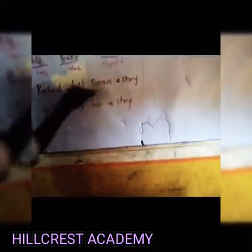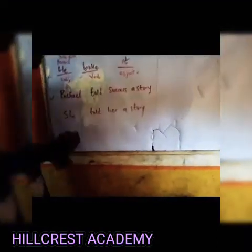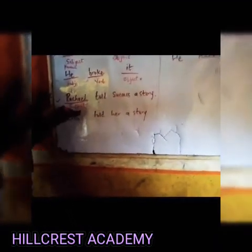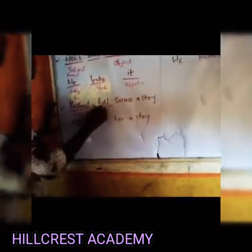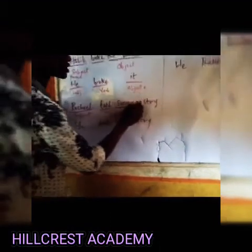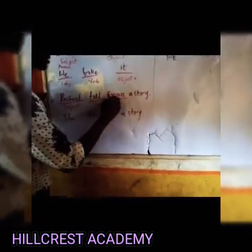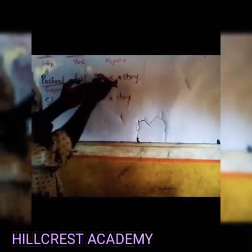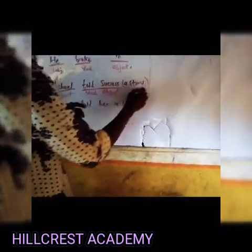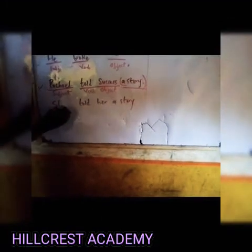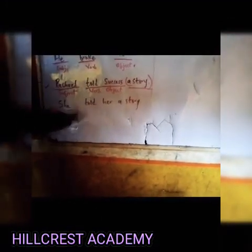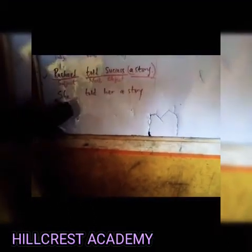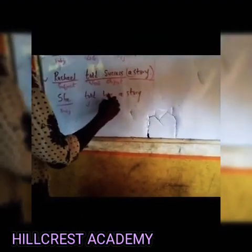Let's go on to the second example: 'Rachel told Success a story.' Rachel here is the subject — she is a noun — because she performs the action. Told is the verb — the action that was performed. Success here is the object that receives the action 'told.' So we have: doer of the action, action itself, and receiver of the action. Rachel becomes the pronoun 'she' — because a subject can be a noun or a pronoun. So: she told her a story — subject, verb, and object.